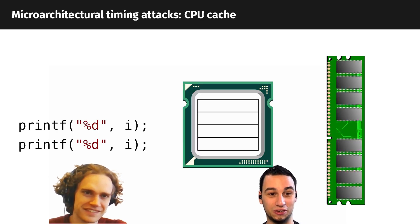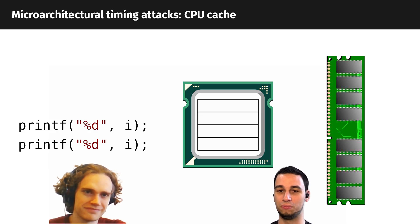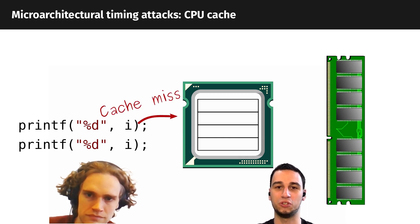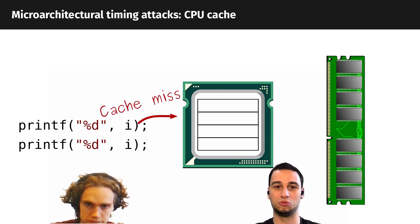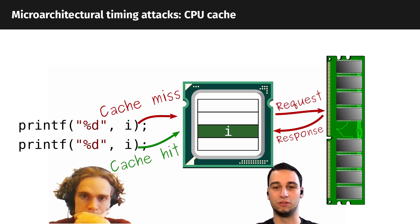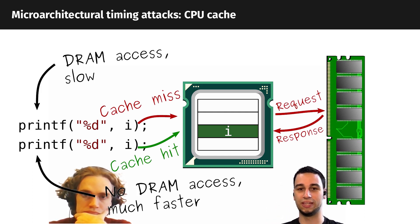This all looks nice and easy, but then you have things like caches — things that are not even visible on your architectural level. Look at this simple snippet: I print one variable twice. The first time, it has to be gathered from main memory — it won't be in the cache. But the second time, there will already be a copy in the cache that you don't even see at your architectural level. This makes it faster, and you can clearly see a difference between getting a value from DRAM versus getting it from the cache.